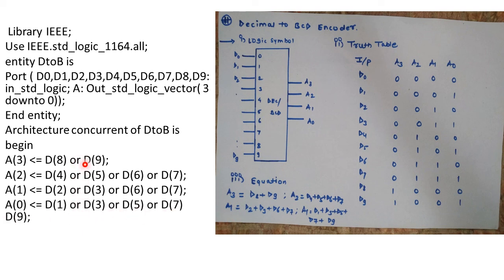Lastly we will end the architecture. So in this way one can write VHDL code for decimal to BCD encoder. Thank you very much.